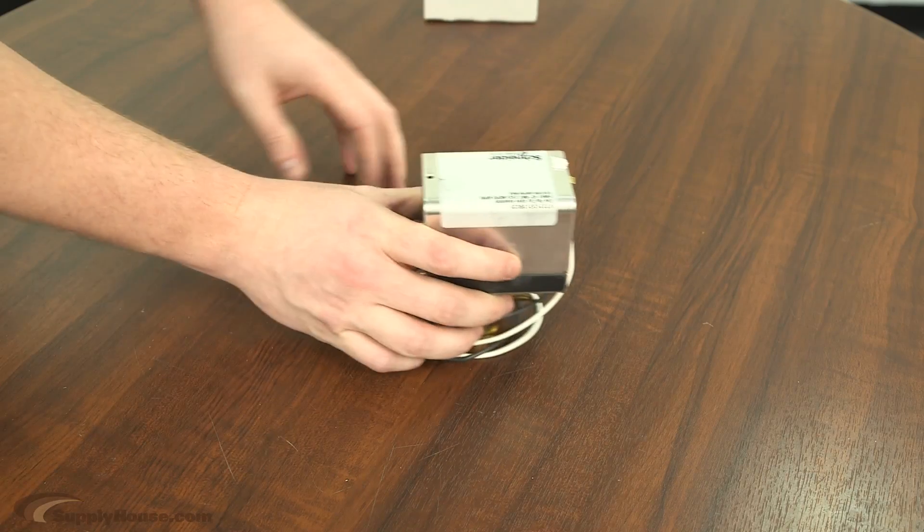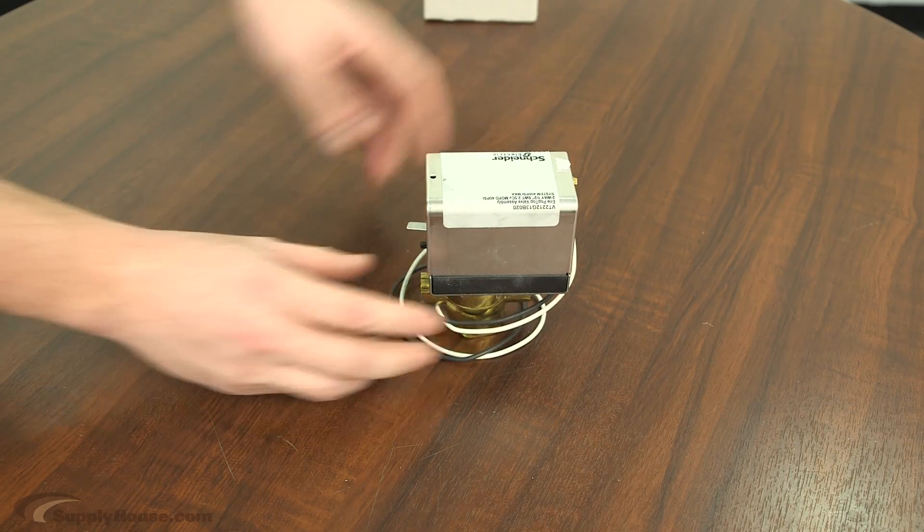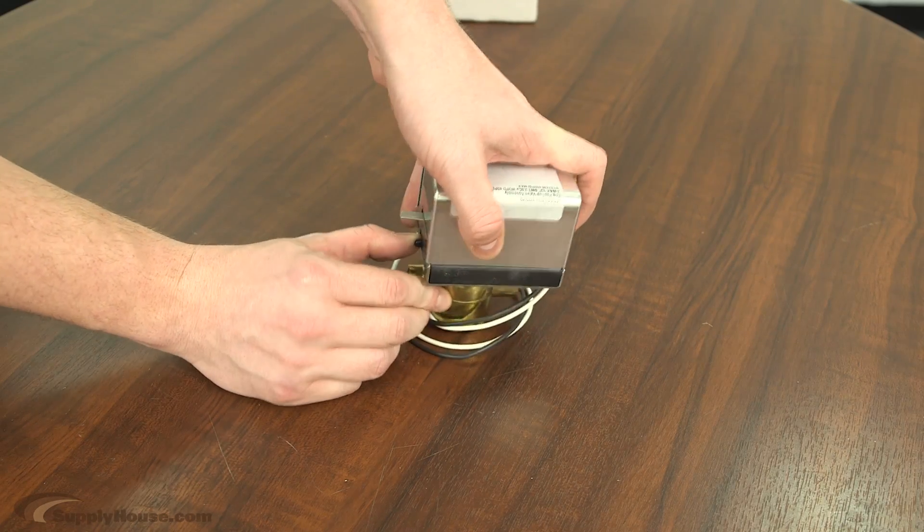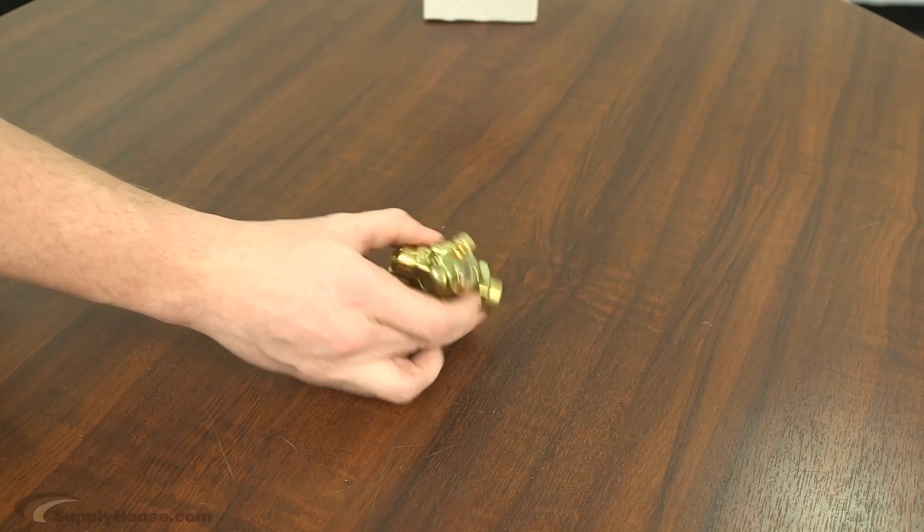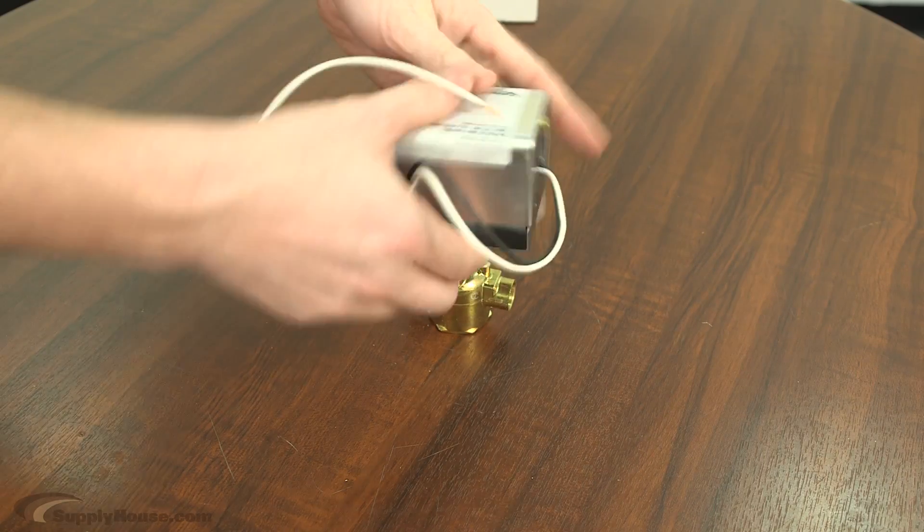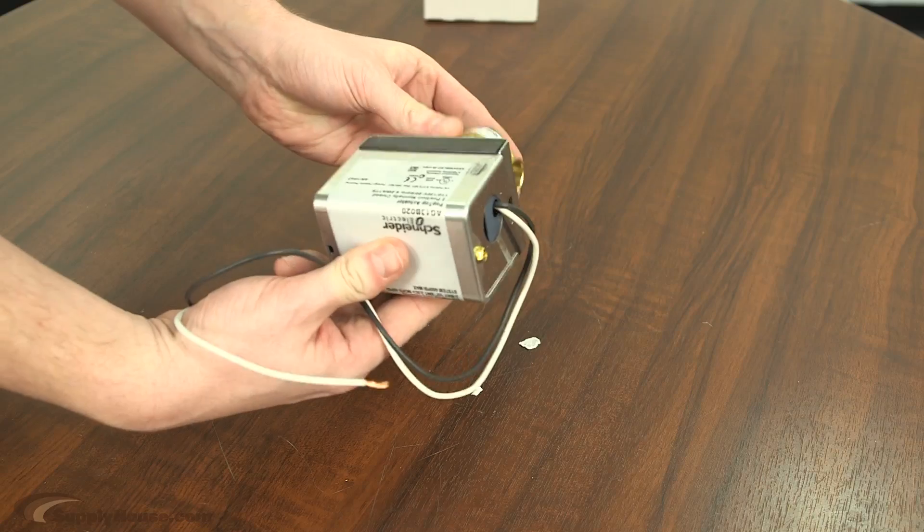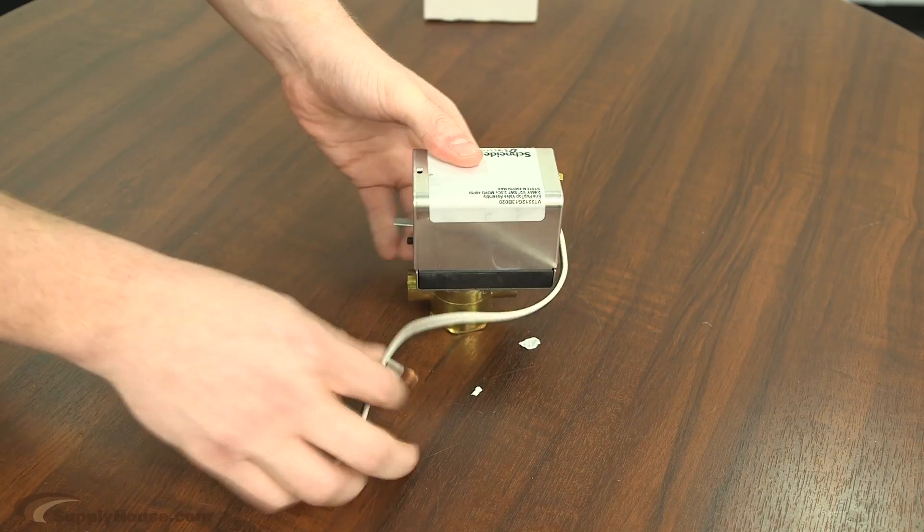Here we have the Erie Pop Tops. This is another motorized zone valve. This one's really easy. There's a little lever here. Slide it off. It attaches right from the body. Pop on the new one. Back in business.